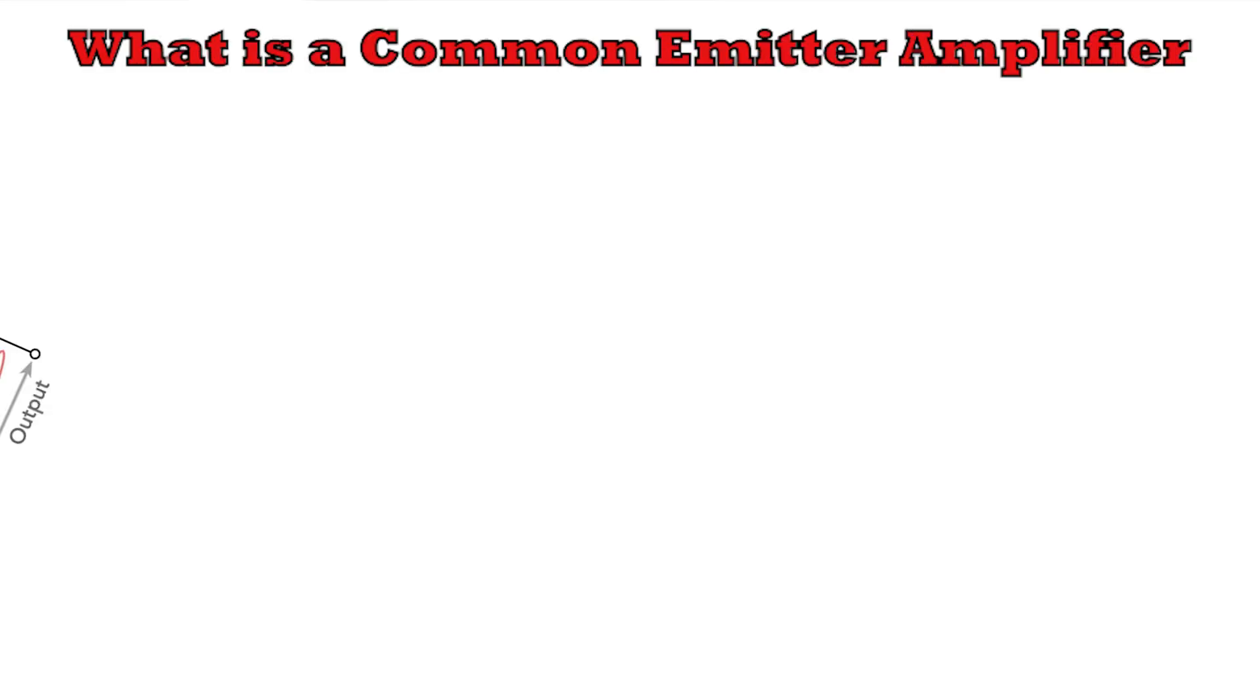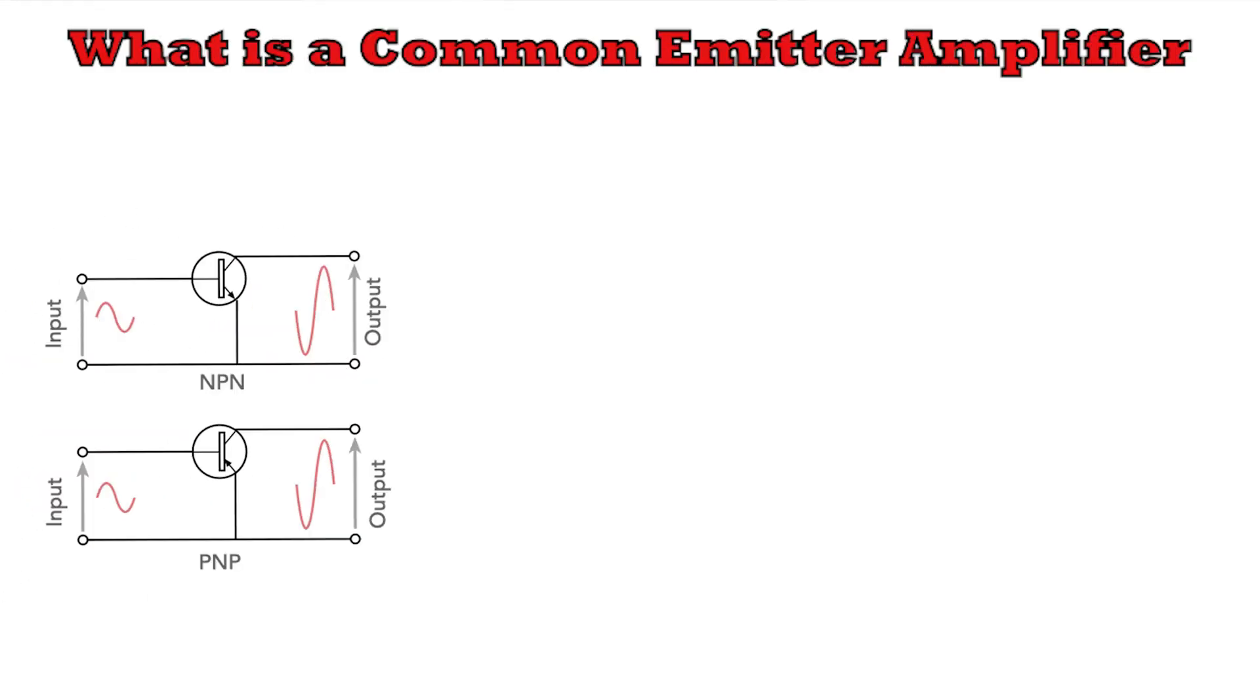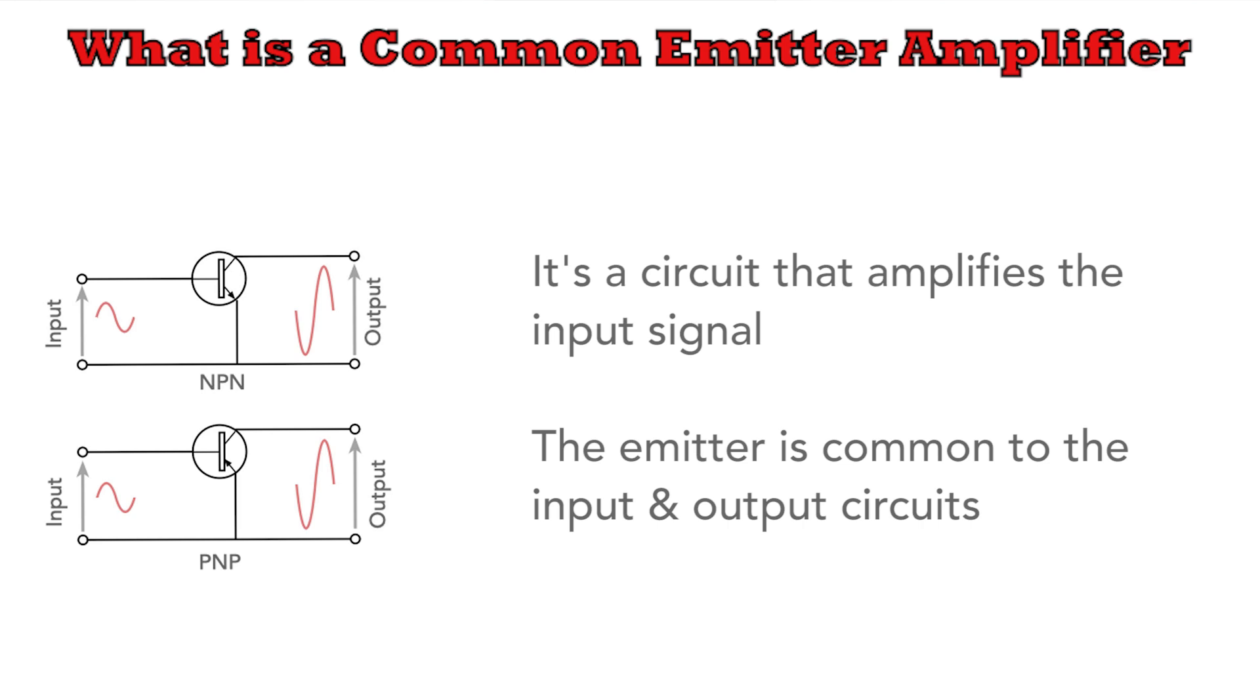First of all though, what is the common emitter amplifier? In its simplest form, it's a circuit that uses a transistor to amplify an input signal. The common emitter part refers to the fact that the emitter terminal is common to both the input and output circuits.